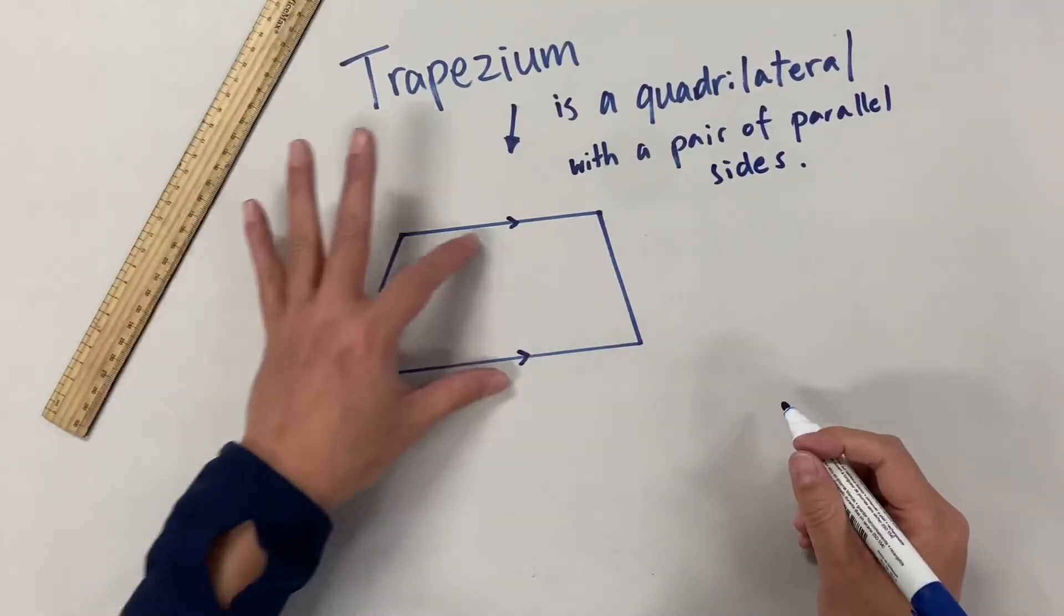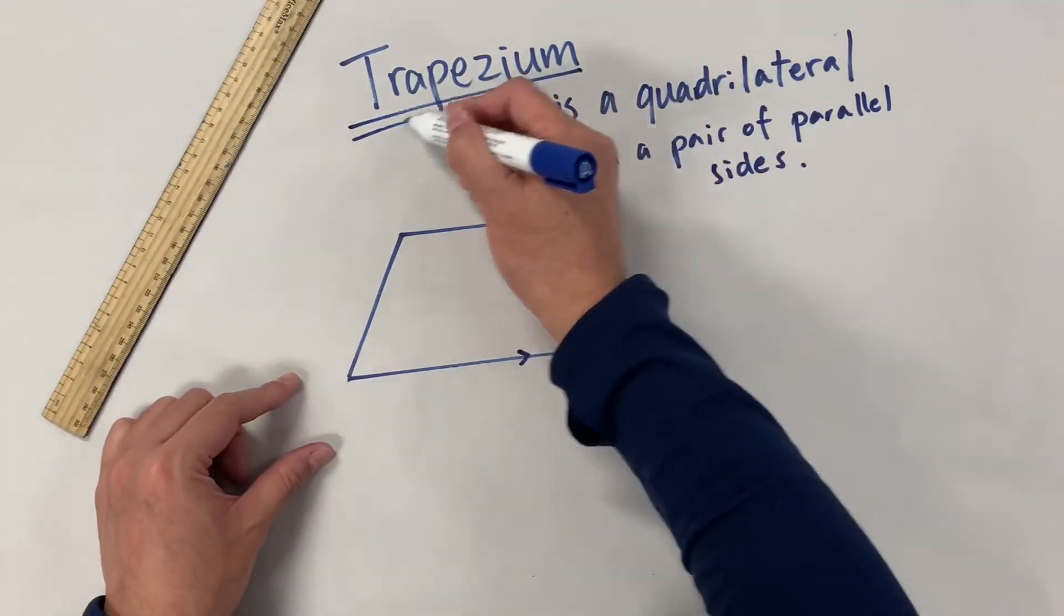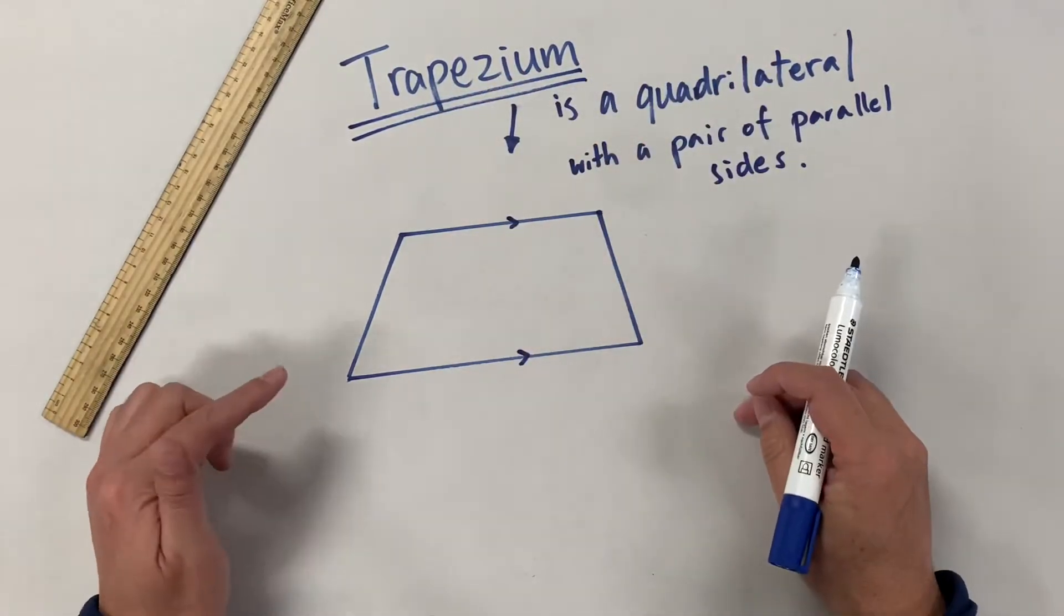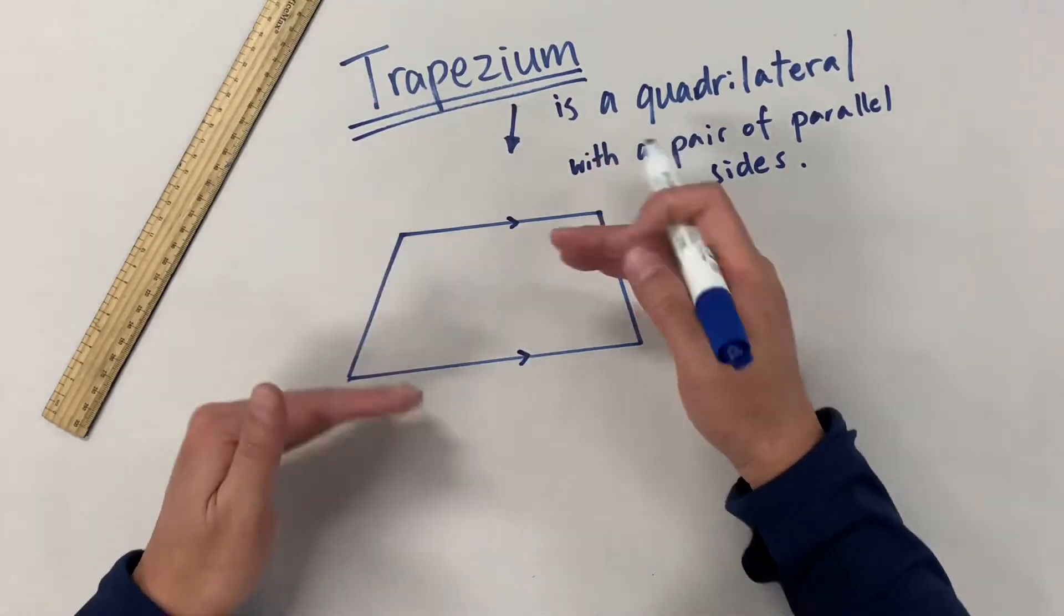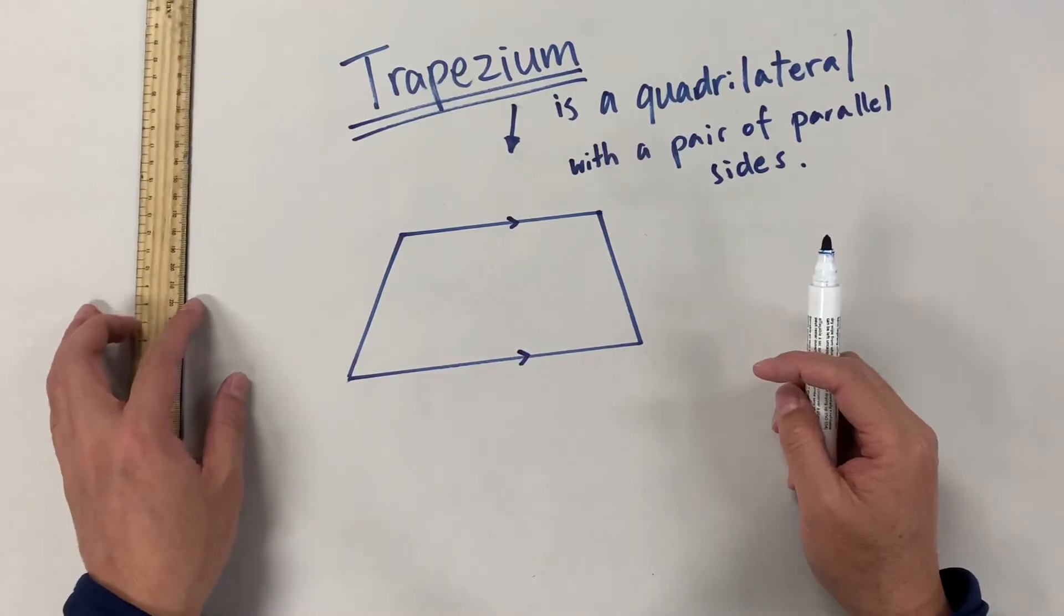Now at least you have to have one pair of parallel sides. Wait a minute. Do you have or do you know a shape with one pair of parallel sides? Have you seen that before?